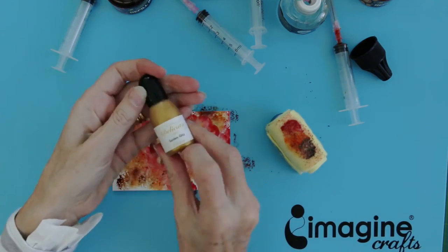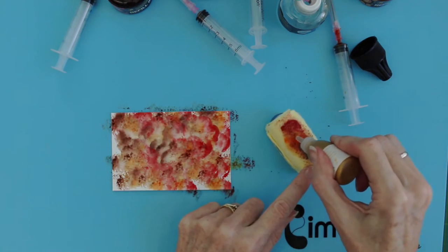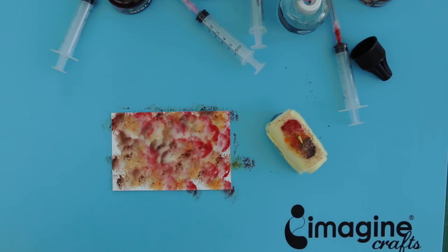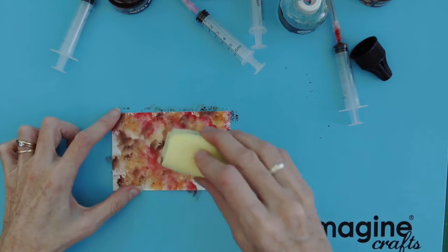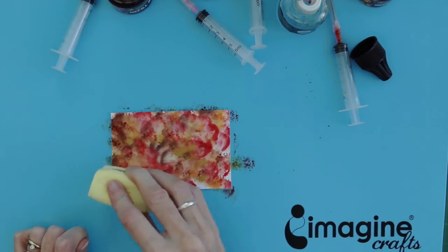Leave to dry for a few seconds and I'm adding some Delicato Golden Glitz to my dauber just to give a little bit more sparkle and shimmer to the design.